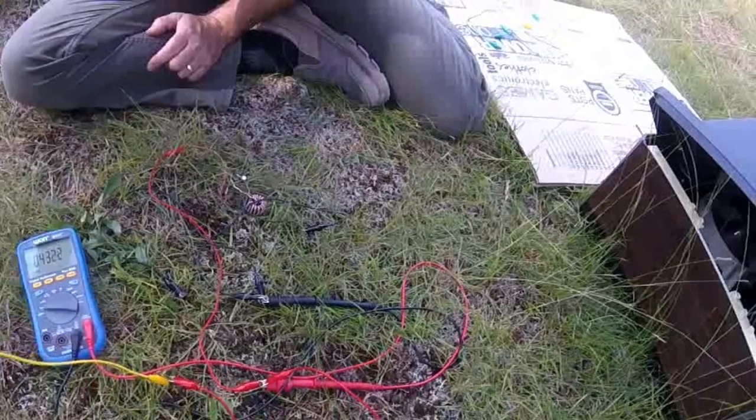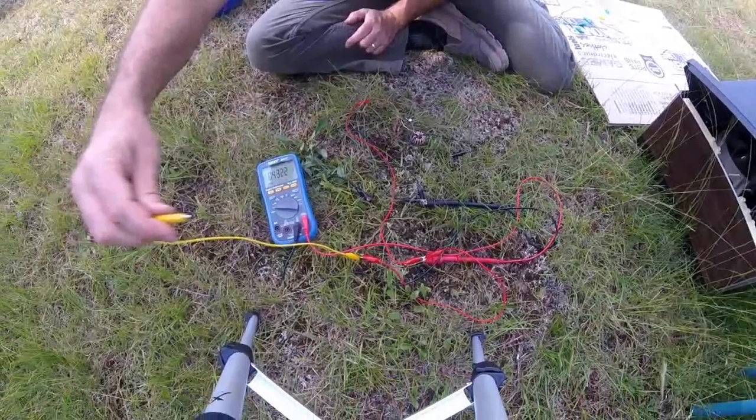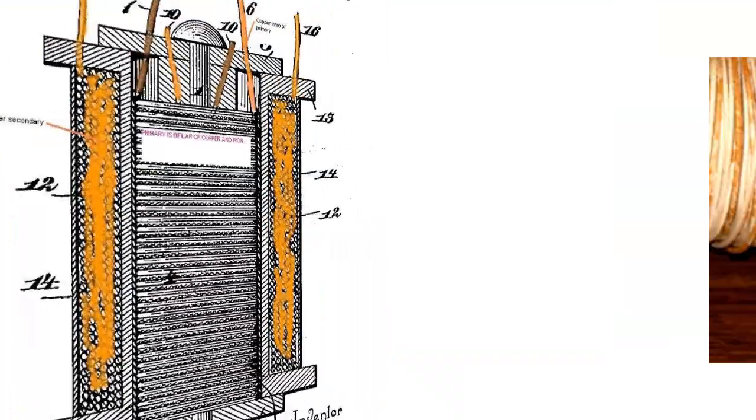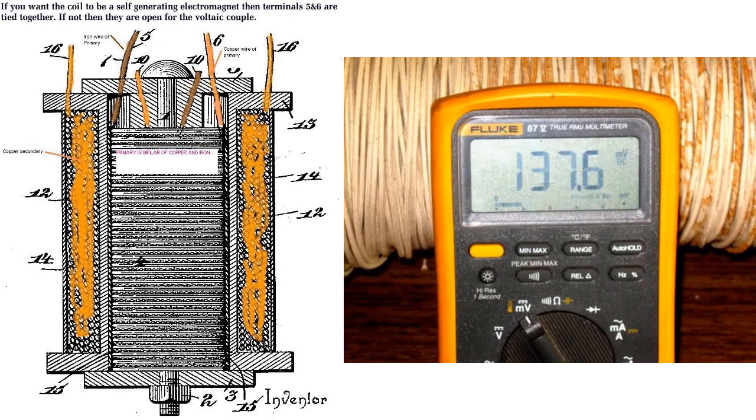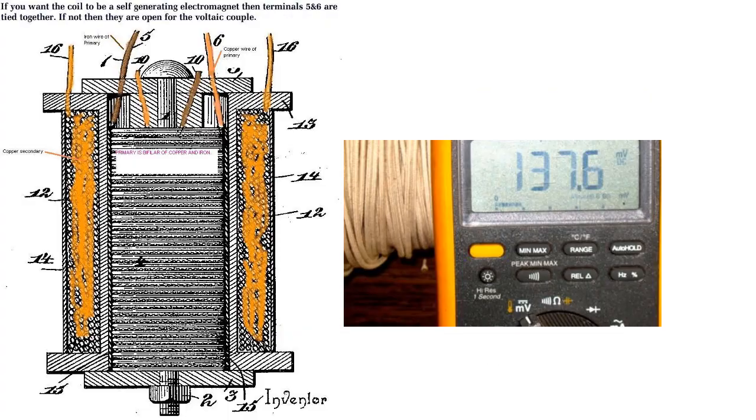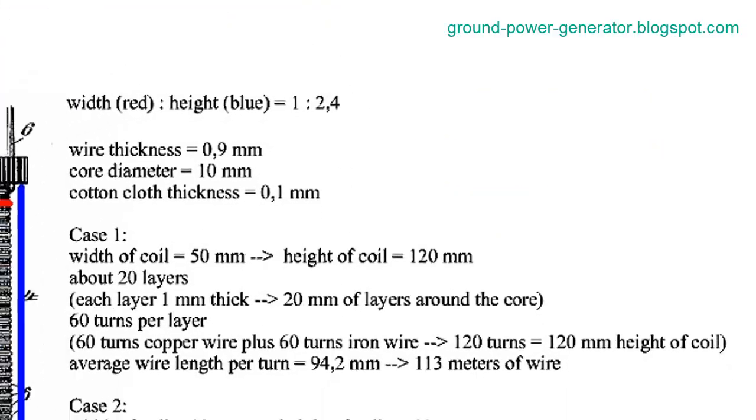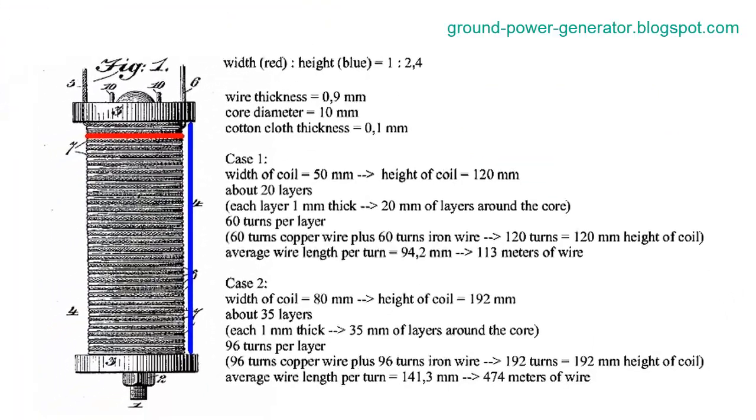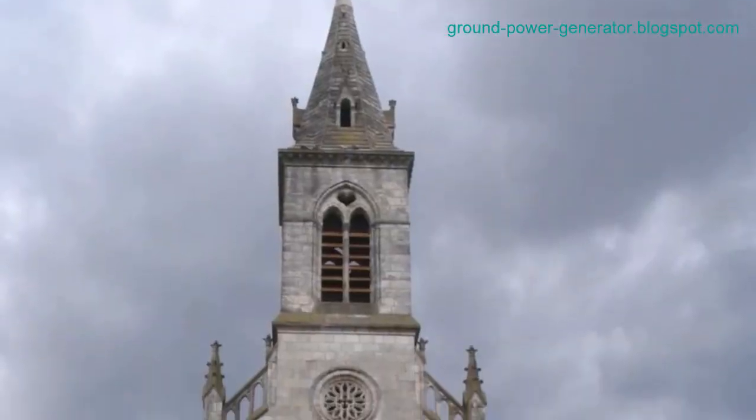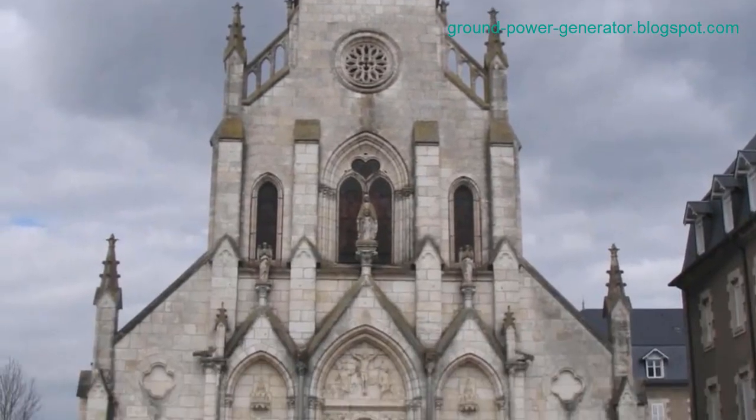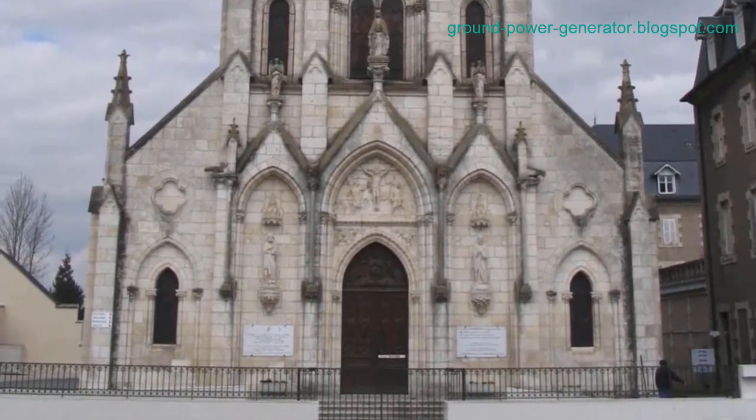The quest for free energy has persisted for generations. Among the various alternative energy sources, the concept of an earth battery, sometimes associated with the mysterious ether field, has captured the imagination of many. This essay explores the earth battery as a potential source of electrostatic energy and delves into the intriguing connection between high voltage, forbidden materials, and the ether field in the context of free energy generation.